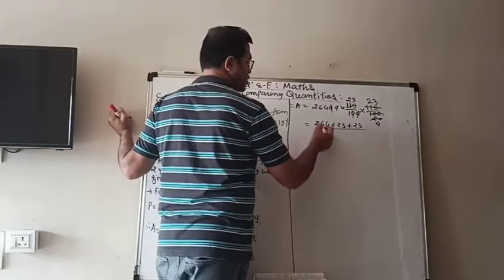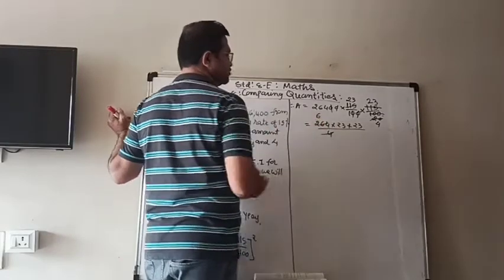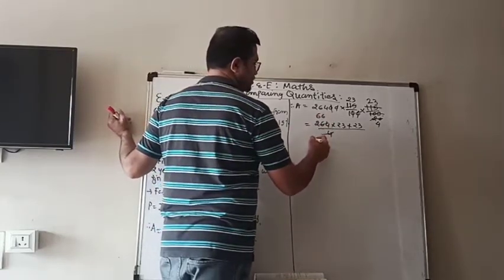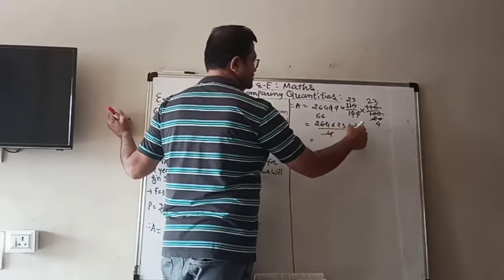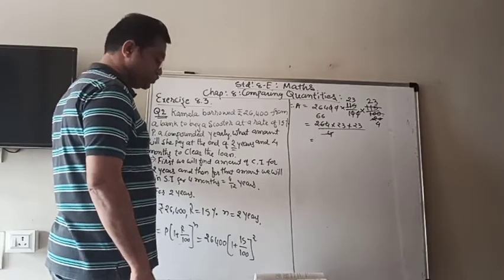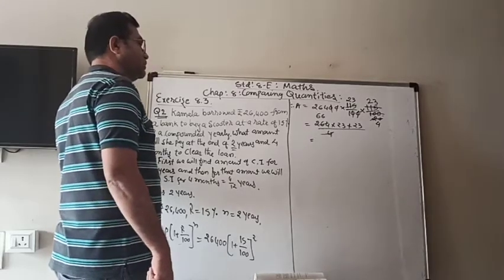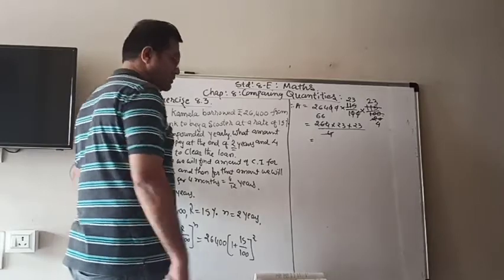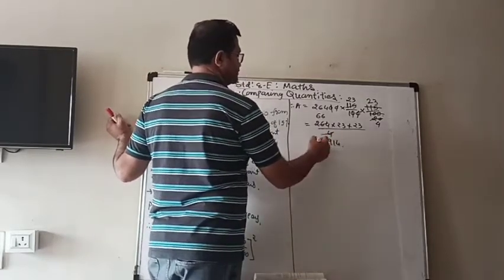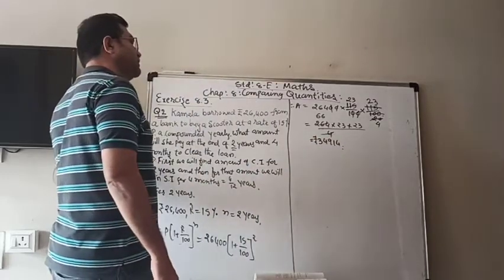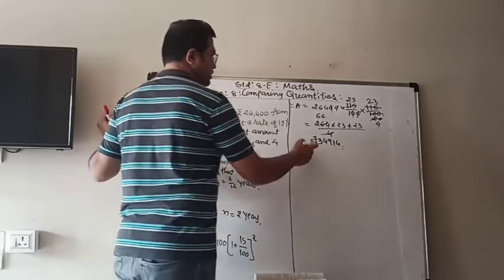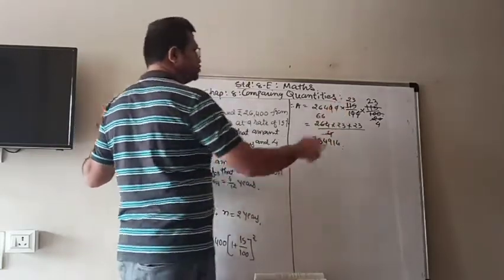After further cancellations, 4 divides 264 giving 66. So we multiply 66 × 23 × 23. I did the multiplication in rough. The result is 34,914. That is the amount at the end of 2 years.